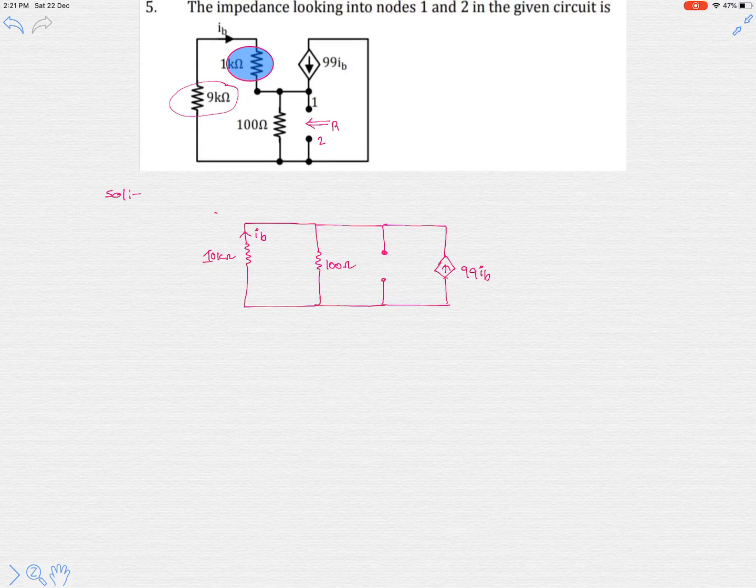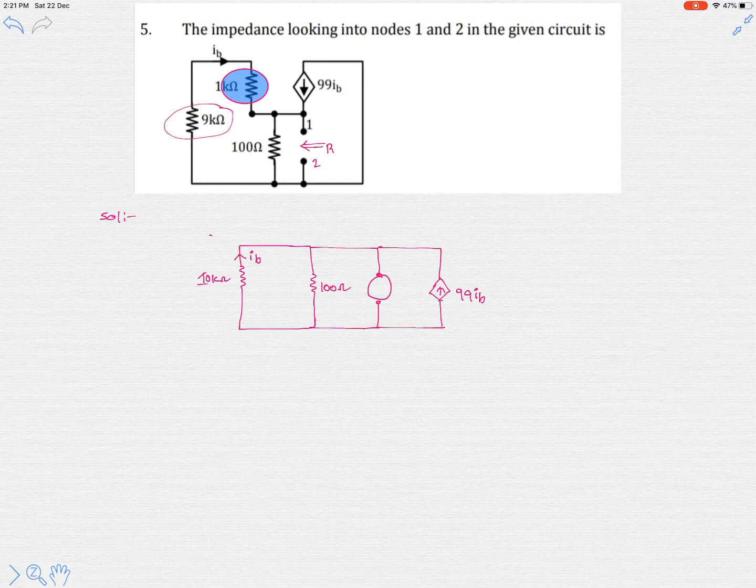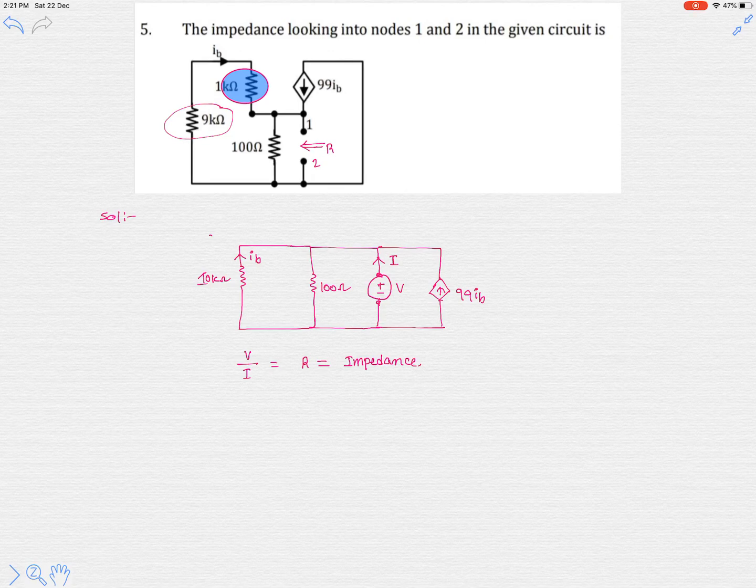Now in order to calculate the impedance looking into these nodes, let's add a voltage source, let's say V, which is delivering current I. The ratio V over I is known as the impedance that we are looking for. Clearly all the four branch items present in the circuit are in parallel.